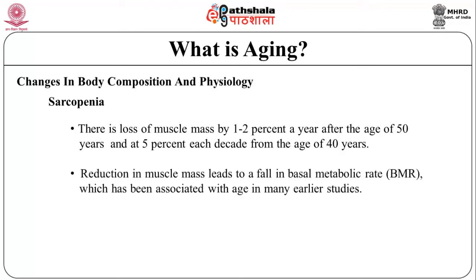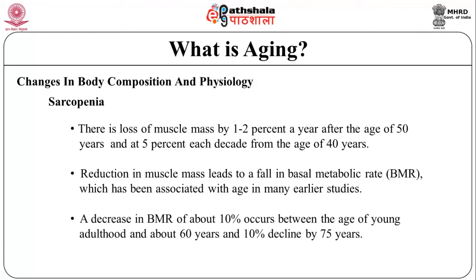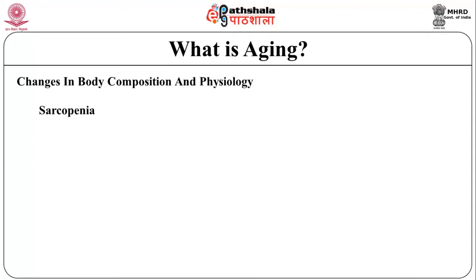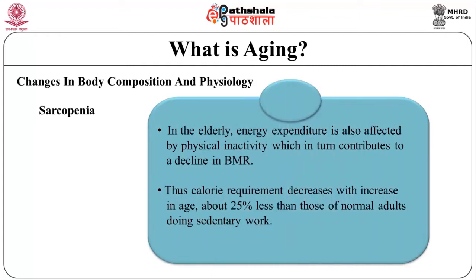Reduction in muscle mass leads to a fall in basal metabolic rate (BMR). A decrease in BMR of about 10 percent occurs between young adulthood and age 60, and another 10 percent decline by age 75. In the elderly, energy expenditure is also affected by physical inactivity, which in turn contributes to the decline in BMR. Thus calorie requirement decreases with increasing age — about 25 percent less than those of normal adults doing sedentary work.